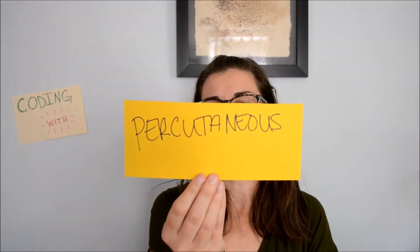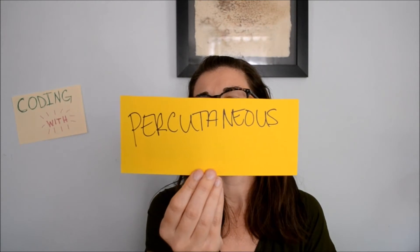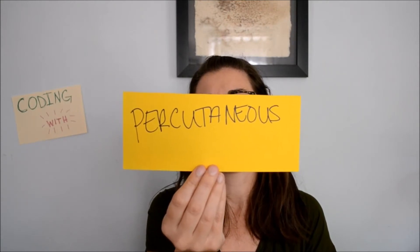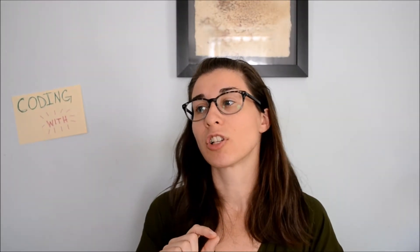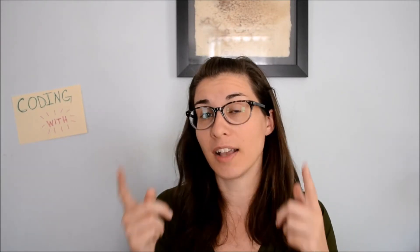Then we have percutaneous — entry by puncture or minor incision of instrumentation through the skin or mucous membrane and any other body layer necessary to reach the site of the procedure. Percutaneous can be a little tricky. I still to this day have some issues deciding if it's an open or percutaneous procedure with some operations in the subcutaneous tissue and fascia. With percutaneous, it's going to be a very small incision, usually with something like a PICC line or an IV — whatever tool they can poke into your skin down to whatever body layer. Then they put smaller tools through that needle down into the body part where they can start doing the work.